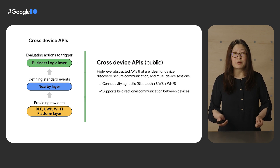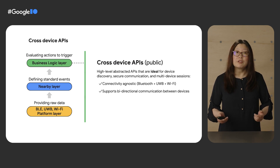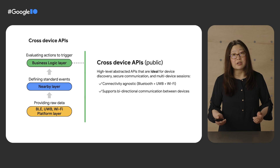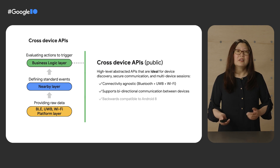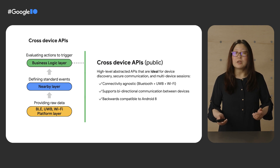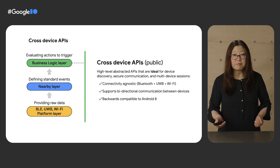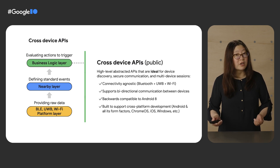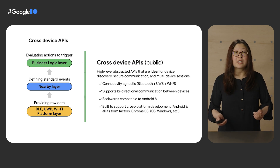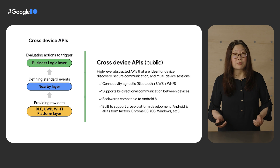These APIs will also support bi-directional communication between devices, so that two devices can not only talk to each other, but also share a common task. These APIs will also be backwards compatible down to API 26, so you can start using them right now. We also intend to support cross-platform development, extending beyond Android to cover Chrome OS, iOS, Windows, and other platforms.